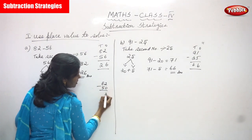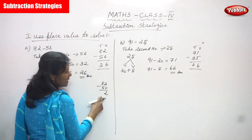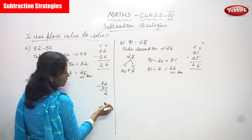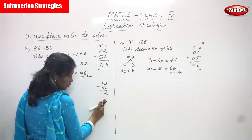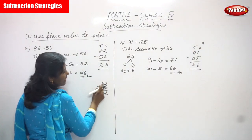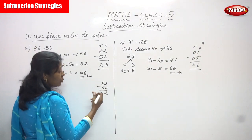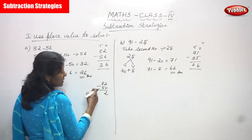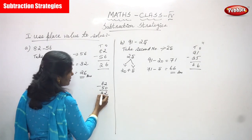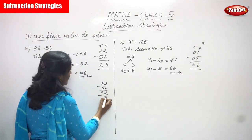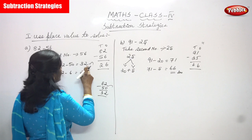For 82 minus 50: 2 minus 0 gives 2. And 8 minus 5 — that means backward counting. After 5, you start counting: 6, 7, 8 — up to 8. That is 3. So the answer is 32.